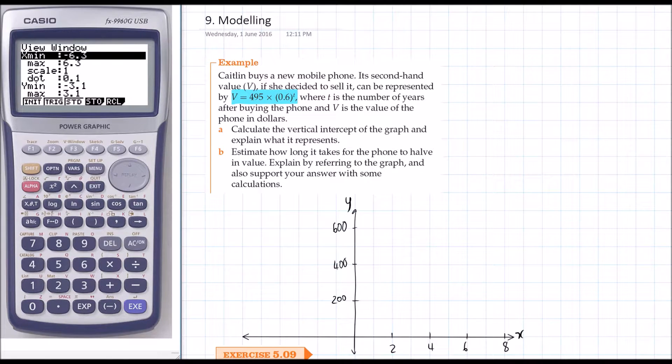I'll get my viewing window to go from negative 1, even though it doesn't make sense because if you're talking about a phone you can't go back in time to when it's owned. I'll go up to 8. And then my y values will go from 0, because the phone can't be worth less than $0. And we'll go up to 600 so we can see what's going on.